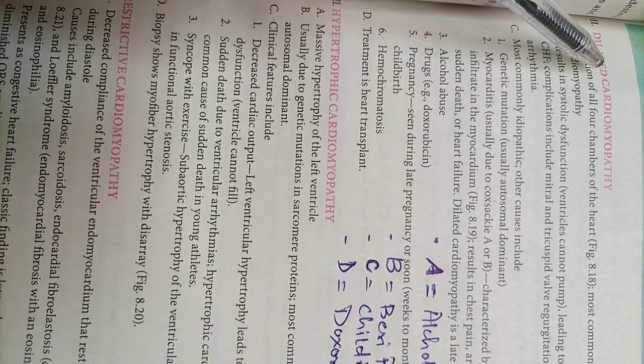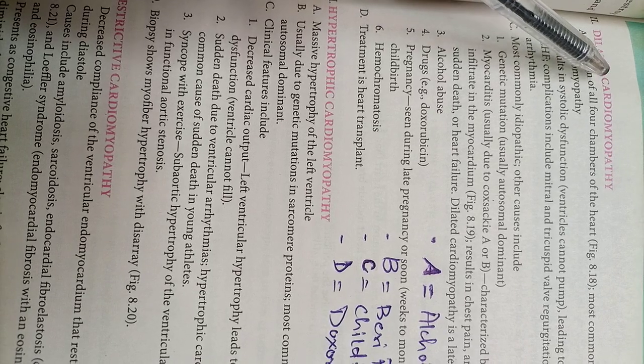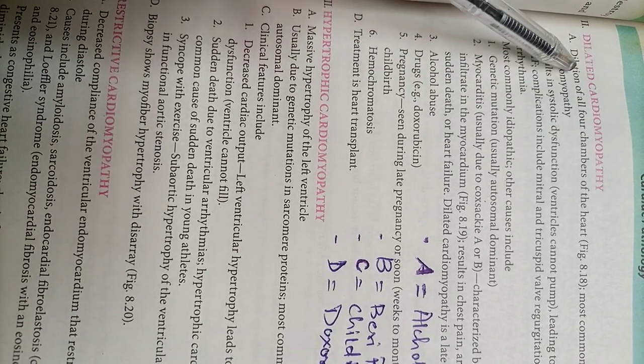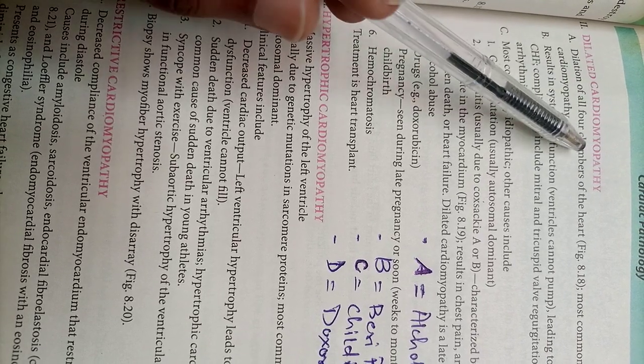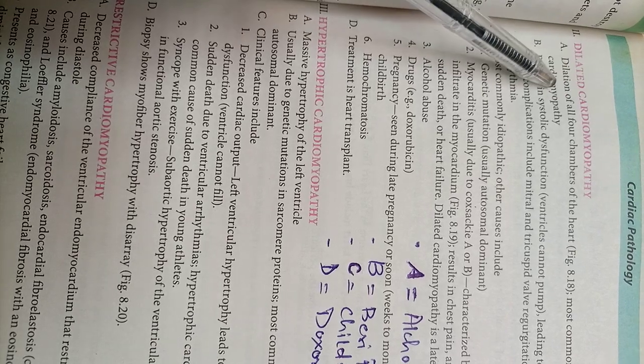Welcome everyone, so now we are going to look at some cardiac pathology abnormalities. First of all, this is dilated cardiomyopathy. The word dilation includes all four chambers of heart will be dilated. Most common cardiomyopathy is dilated cardiomyopathy.